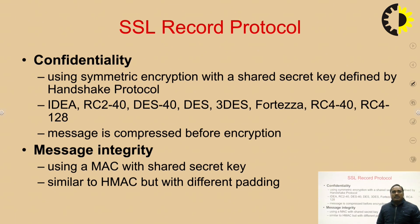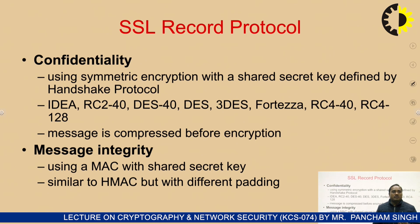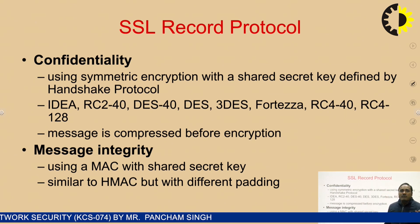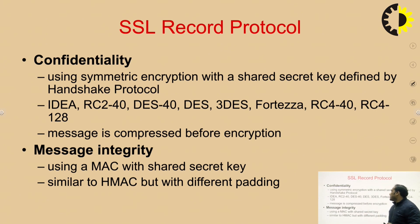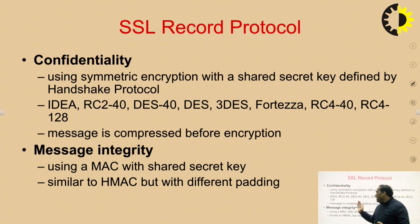SSL record protocol is divided into two main categories: confidentiality and message integrity. Confidentiality means securely transferring information from one end to another using different cryptographic techniques — specifically symmetric encryption with a shared secret key defined by the handshake protocol. Both sender and receiver use a common key to encrypt and decrypt their information. The message is compressed before encryption.